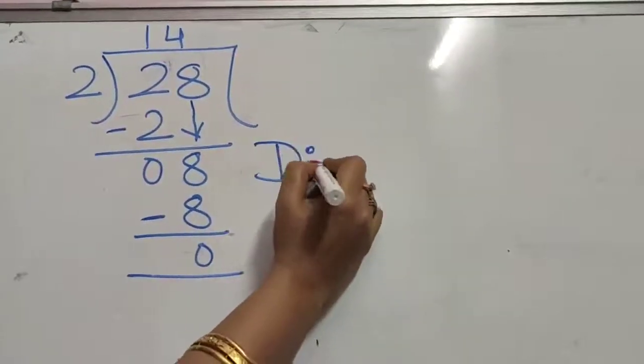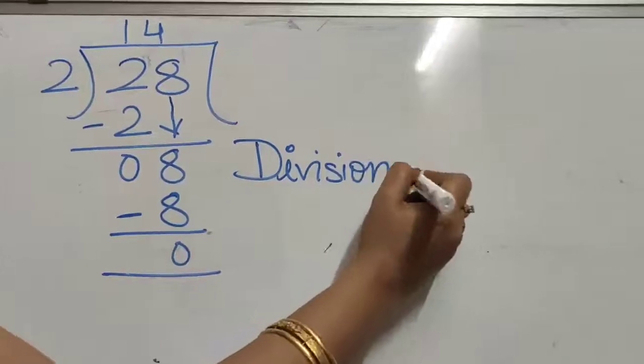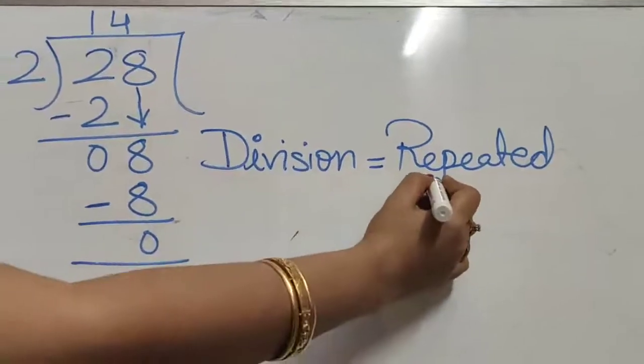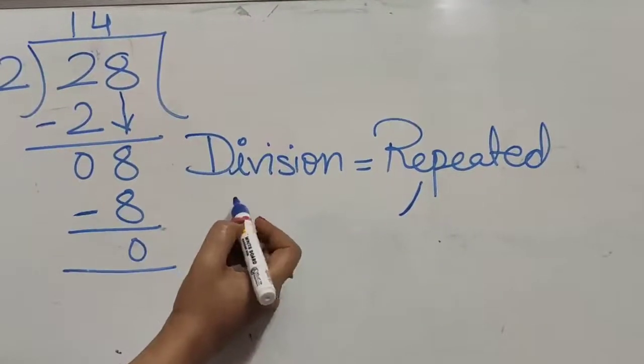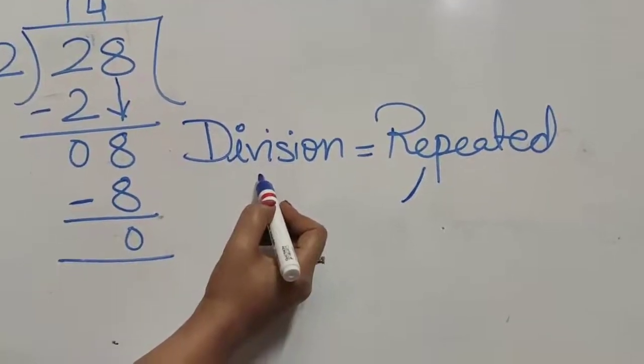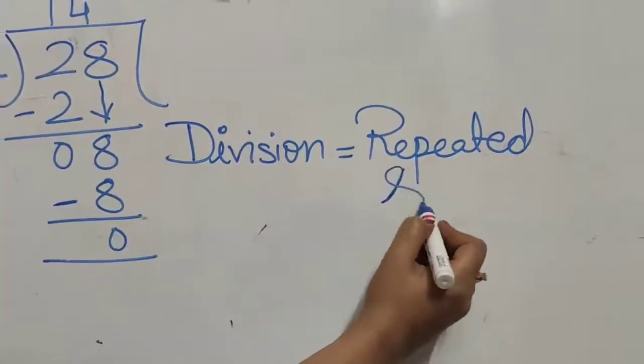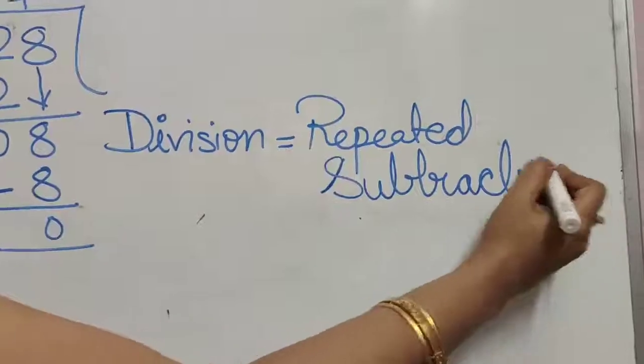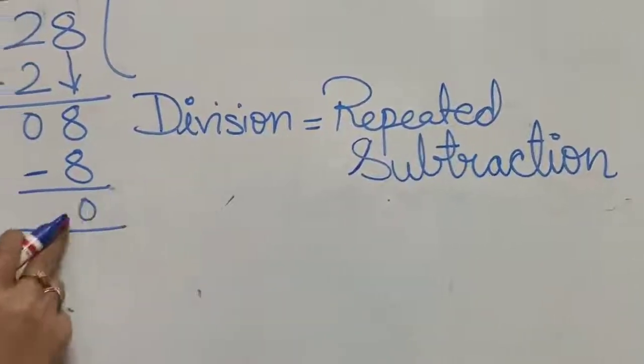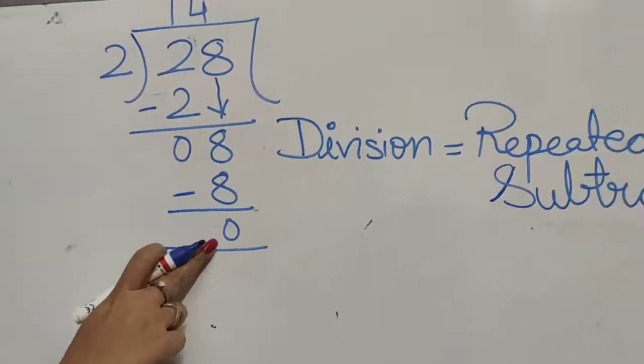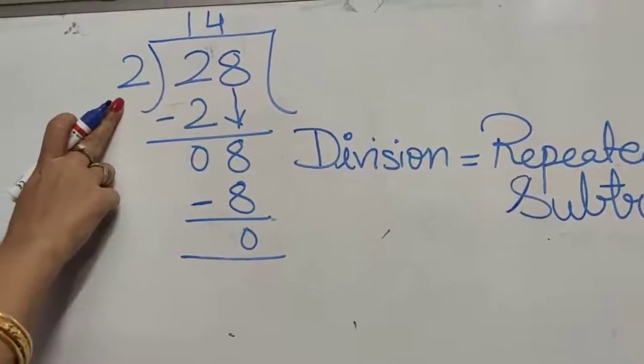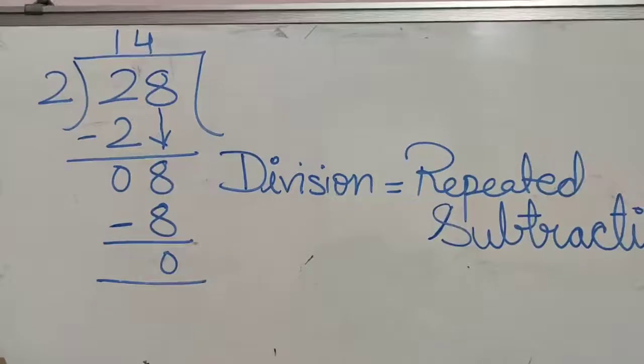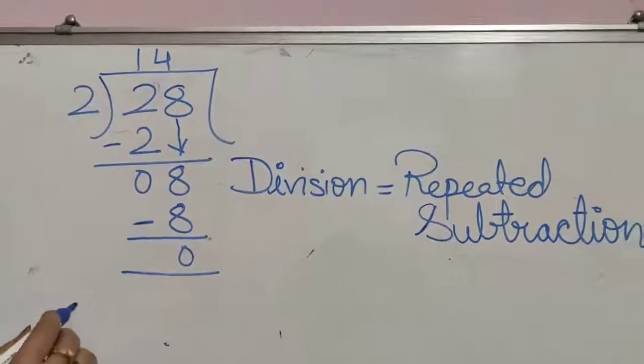So division means repeated subtraction. And we have to subtract till our remainder is 0 or smaller than the number of our divisor. This we have already done in class 3. It is only a recapitulation of the same topic. In this class we will focus on word problems.